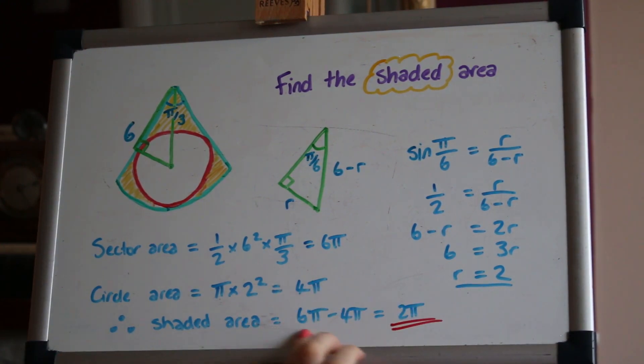Brilliant so the shaded area will be 6π minus 4π leaving us with 2π and that's a good one we want to leave just an exact form in terms of π. Well done if you got that. Do keep practicing there are lots of different creative kind of problem solving questions in that topic so do keep practicing everything expected and have fun.